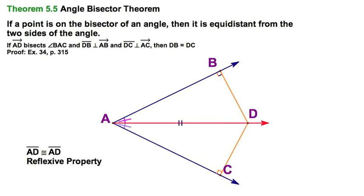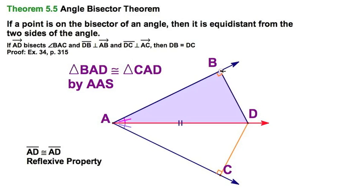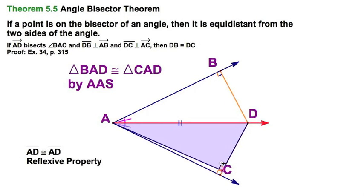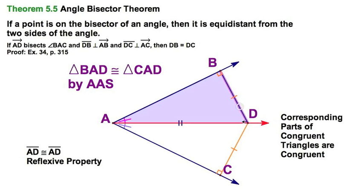By the reflexive property, AD is congruent to itself. Angle, angle, side — two congruent triangles. By the corresponding parts of congruent triangles, these legs of the right triangles are congruent. Therefore, these legs represent the distance from point D to the two sides AB and AC.